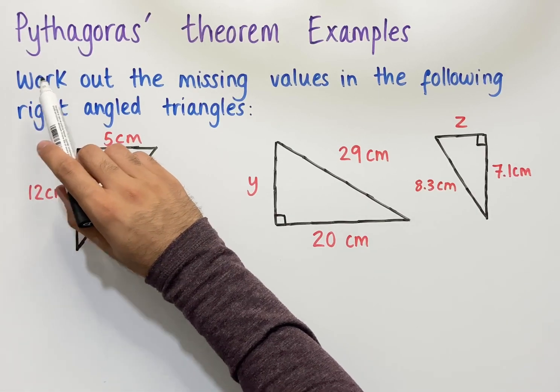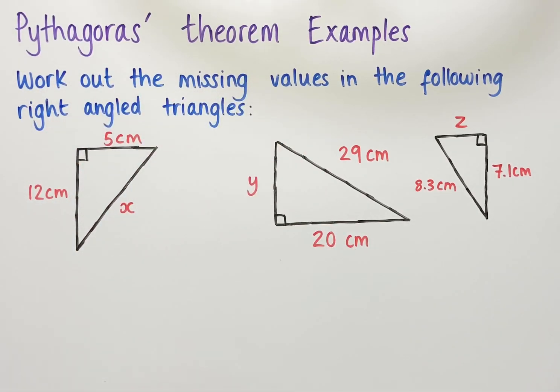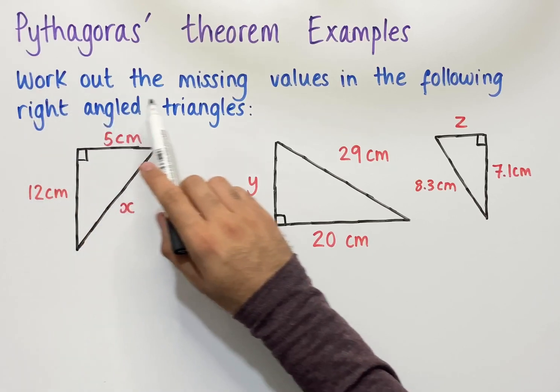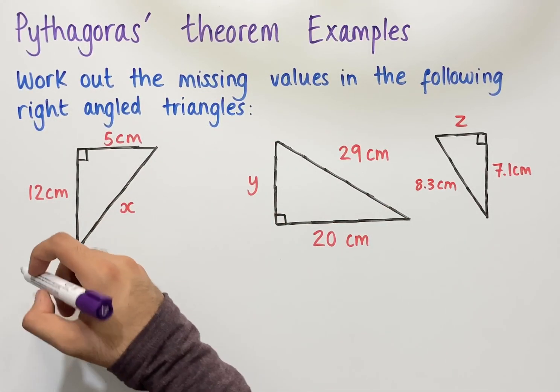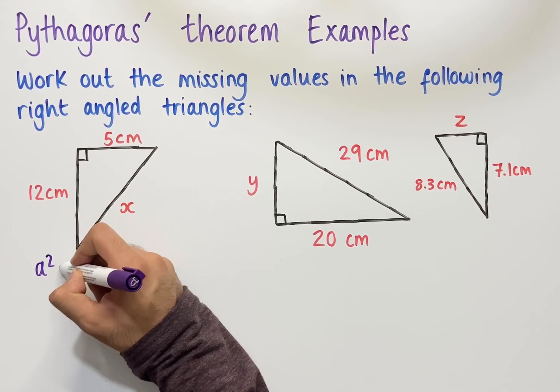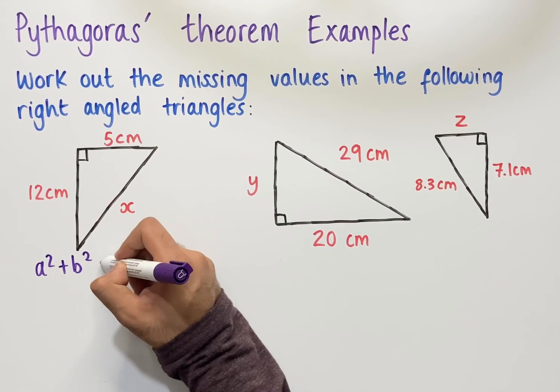Let's look at some examples of where we can use Pythagoras' theorem. The question says, work out the missing values in the following right-angled triangles. Pythagoras' theorem states that a squared plus b squared equals c squared.